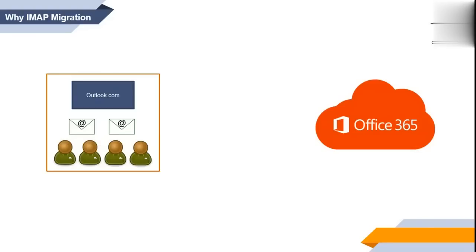One option is to export the contents of mailboxes into a PST file and import that PST file into the Office 365 mailbox. But this is not feasible if you have multiple users — if you have more than 1,000 or 10,000 users, you can't export and import a PST file for each user. In this scenario, you can use IMAP migration.